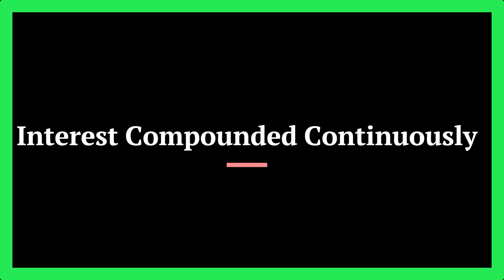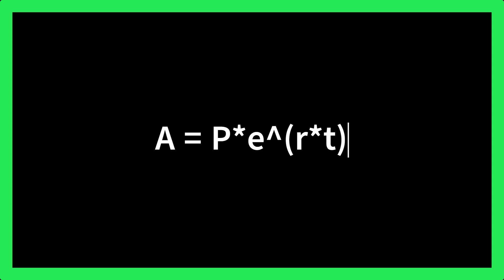When interest is compounded continuously, to find the amount, we can use the following formula: A equals P multiplied by E raised to the power RT. Where A is the final amount, P is the principal or initial amount, R is the interest rate expressed as a decimal, and T is the time in years.